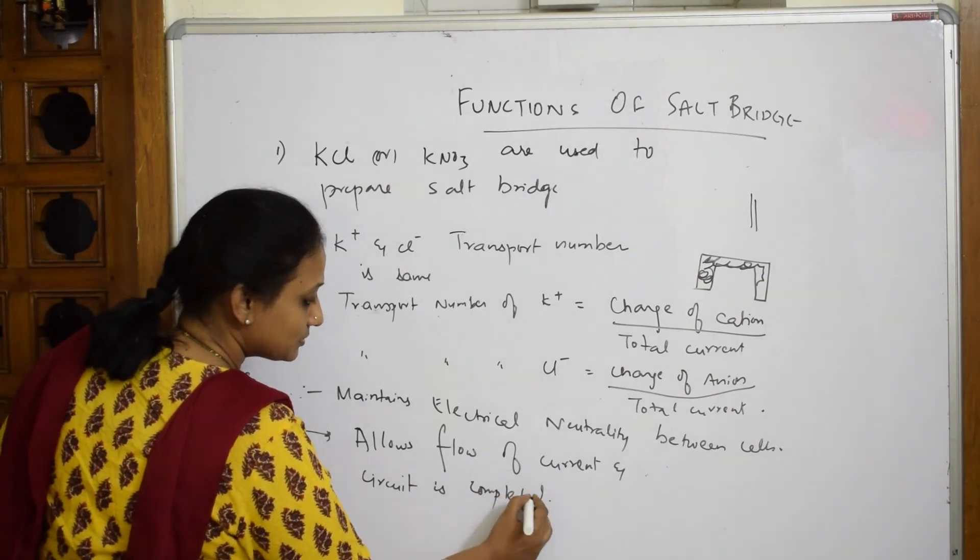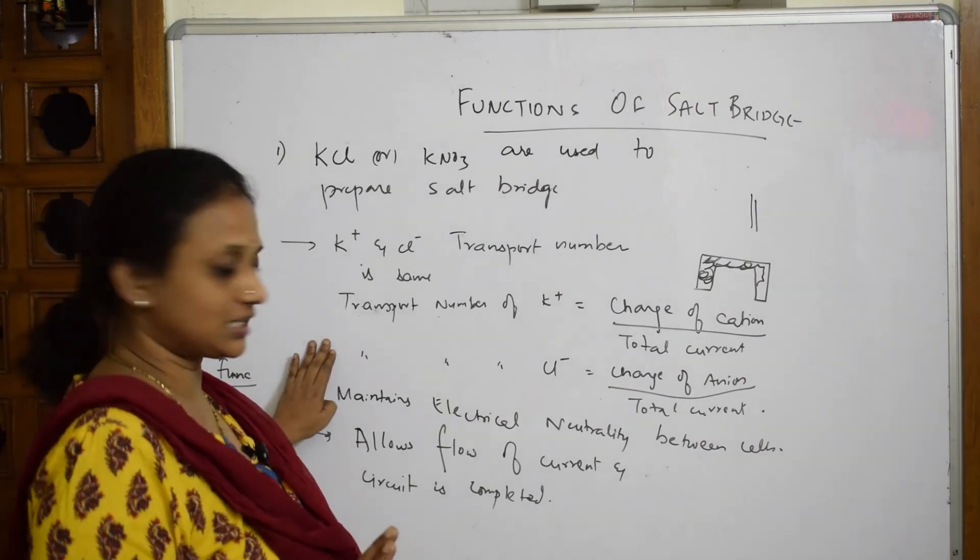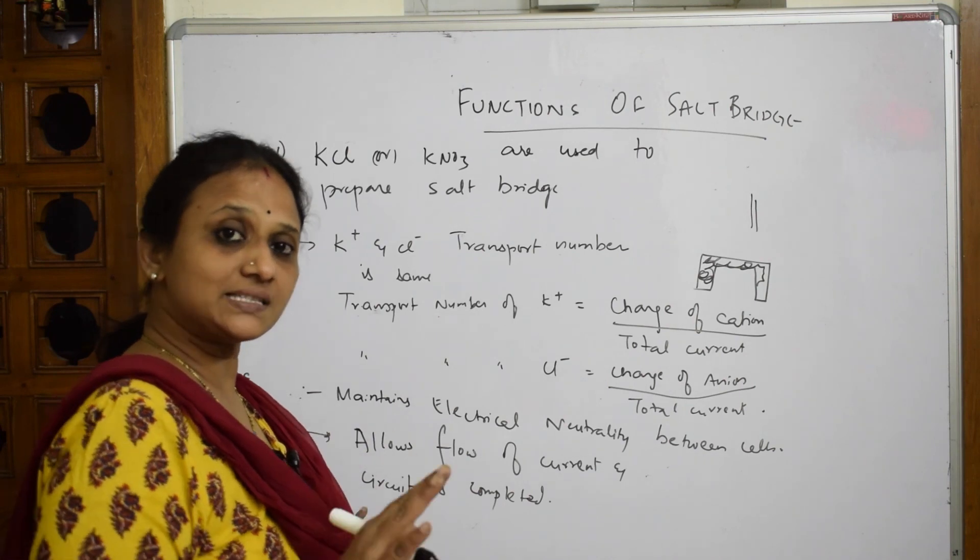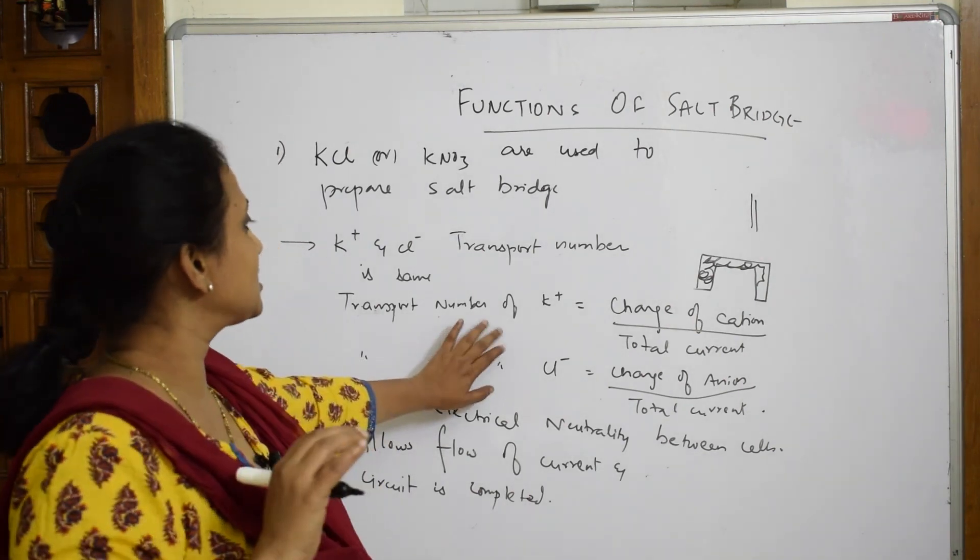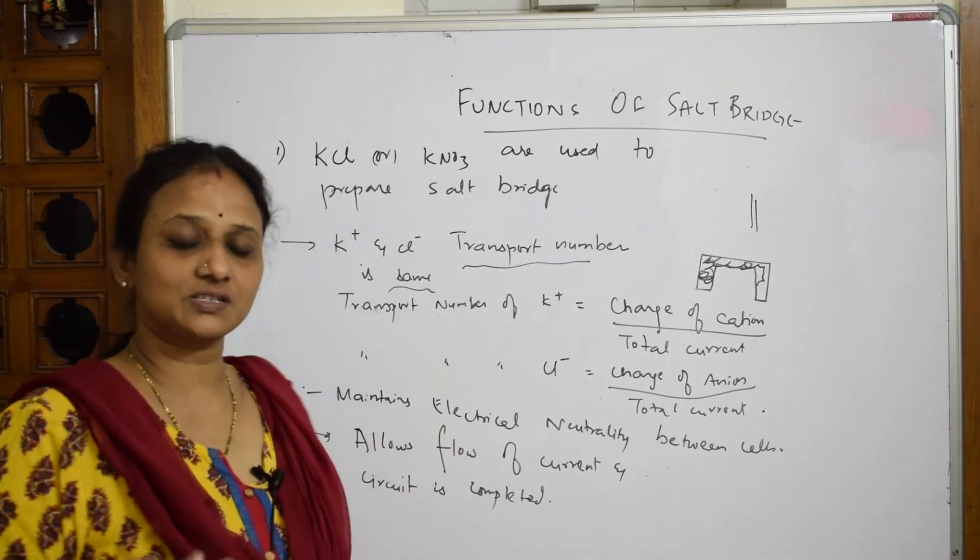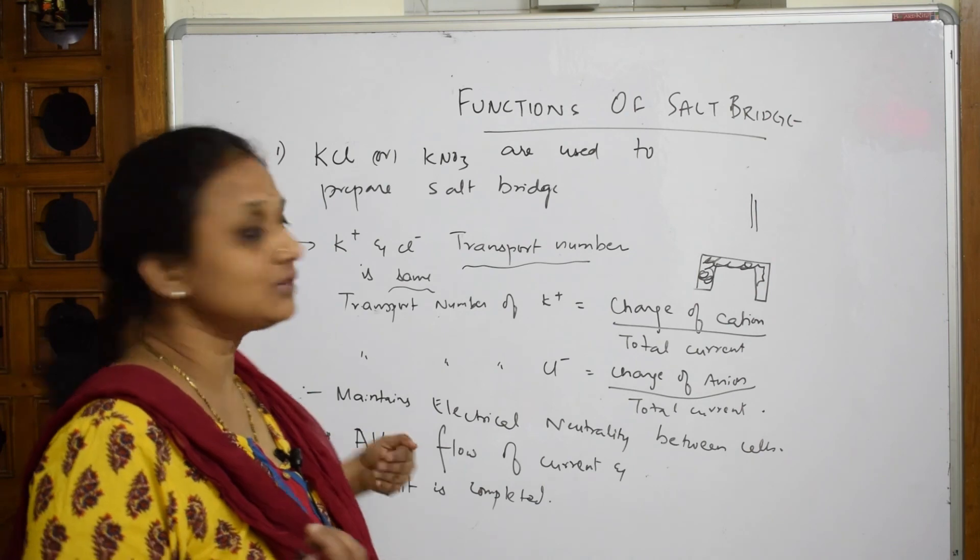So I have picked up the important functions: maintenance of electrical neutrality, which is a keyword; allows flow of current, keyword; completes the circuit, keyword. Why KCl or KNO3? Because the transport numbers are same. That's it. This is how you can finish up your answer, because if it is asked for two marks, we have written one, two, three, four points.